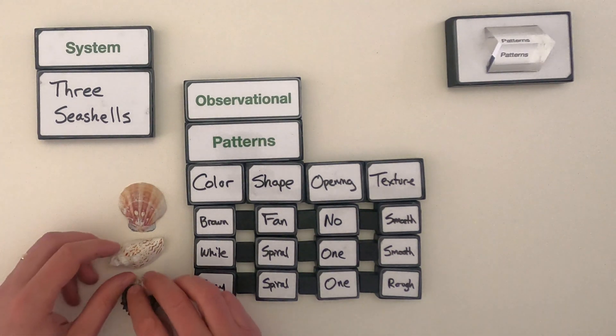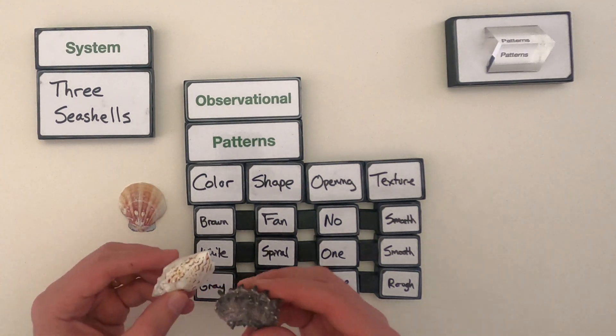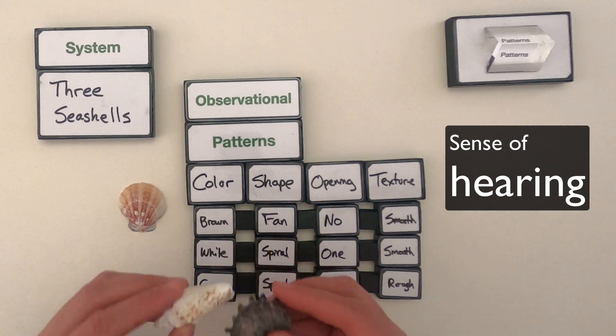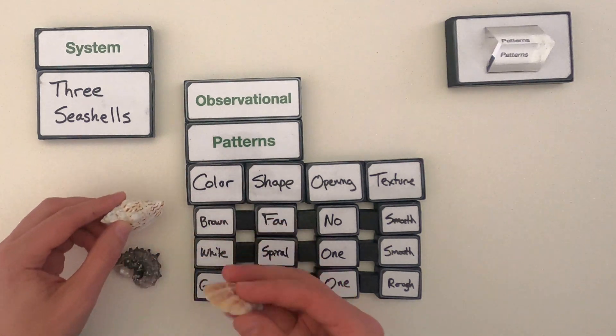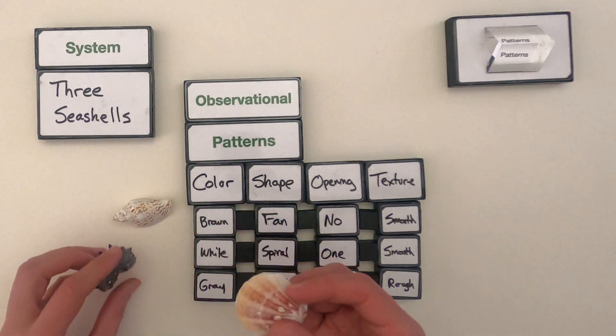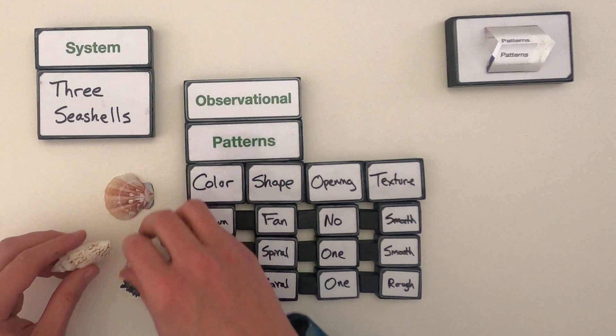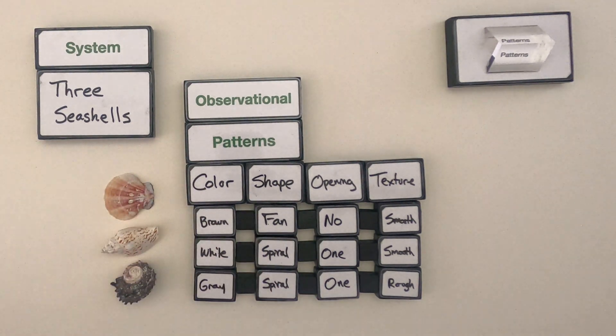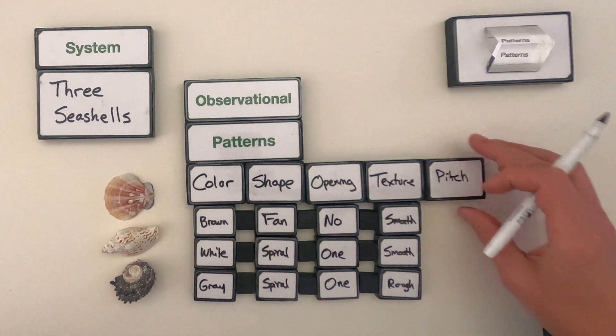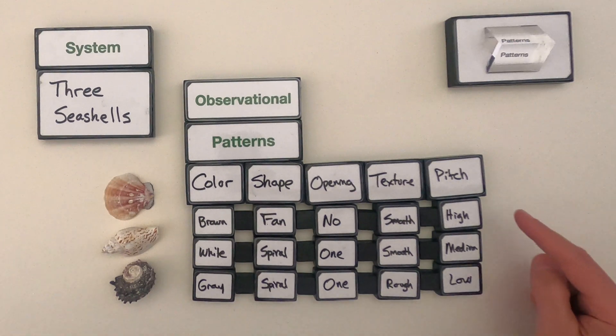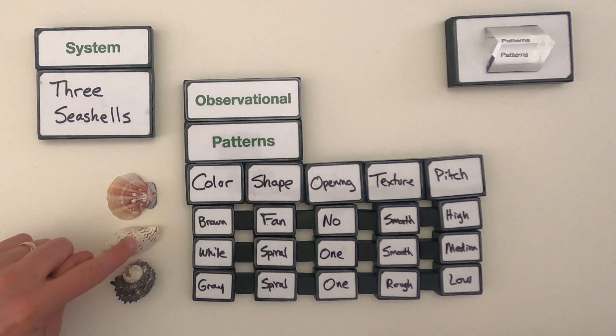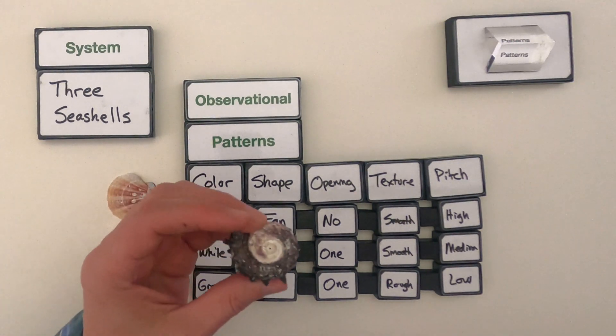Next thing I might use is the sense of sound. So hitting them to each other. So the pitch is important. When I hit the shells together, I found that this one had a high pitch, a medium pitch, and this has a really low pitch.